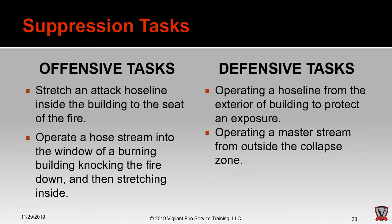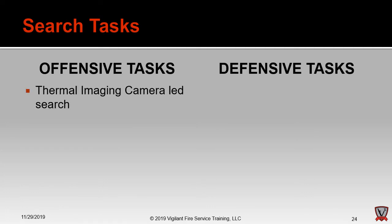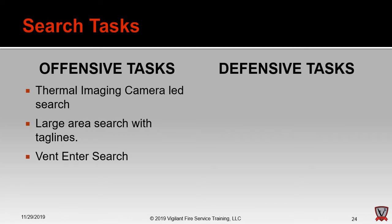Search must happen no matter the strategy, but strategy changes how we perform it. Offensive search tasks include a thermal imaging camera-led search — going room by room aggressively searching for viable victims; a large area search using tag lines off a rope, perhaps in a supermarket or school gymnasium; and a vent-enter-search where we break a window, make entry into one room, isolate it by closing the door, search for a victim, and immediately exit.